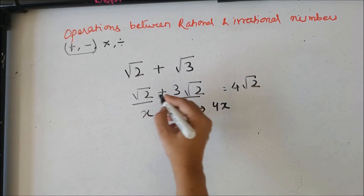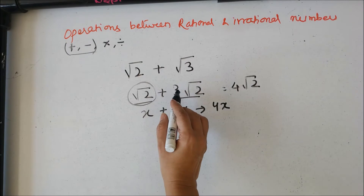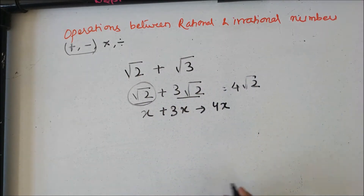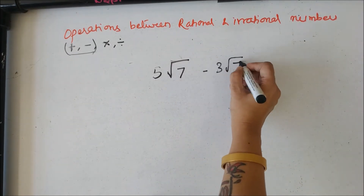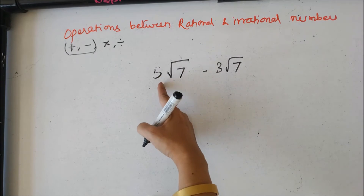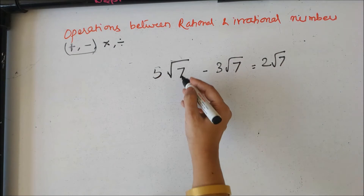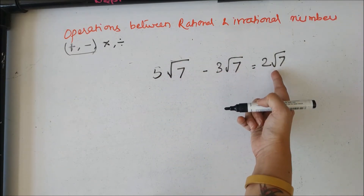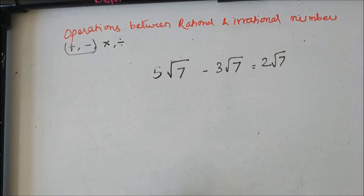Consider root 2 as one unit and add the coefficients from outside; the root part remains as is. This is how you add or subtract irrational numbers. For example, 5 root 7 minus 3 root 7 would be 2 root 7 — just like 5x minus 3x equals 2x.